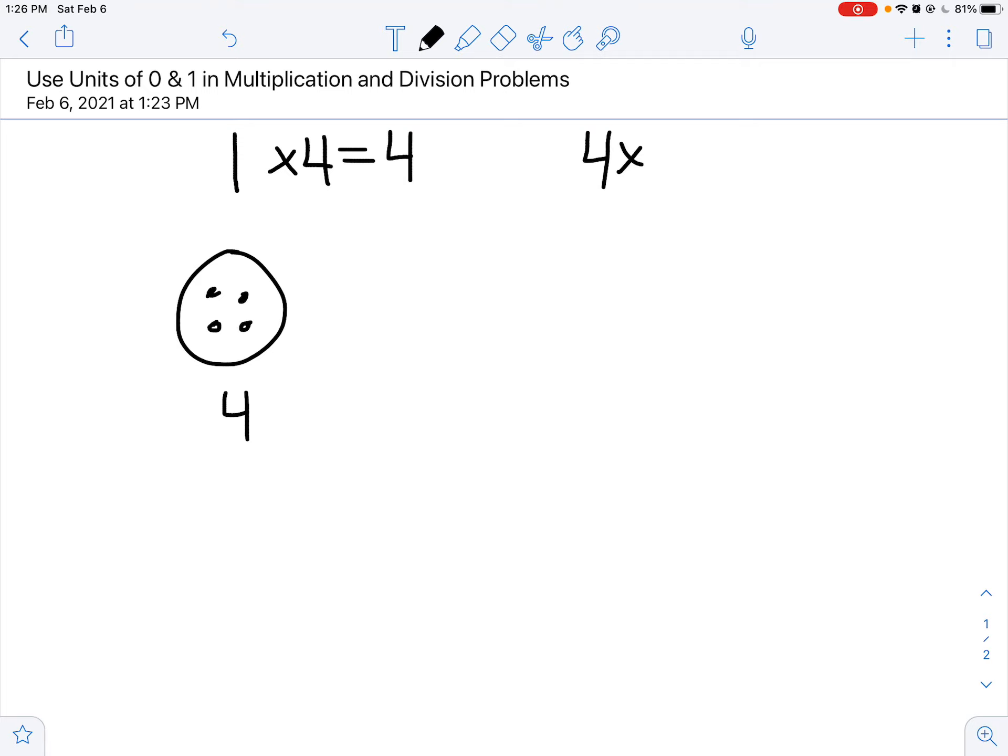What if I turned it around and said 4 times 1? What would that look like? Well, the first number often represents the number of groups: 1, 2, 3, 4, with 1 in each. You could represent it like this. And even that, you can see there's a total or a product of 4.